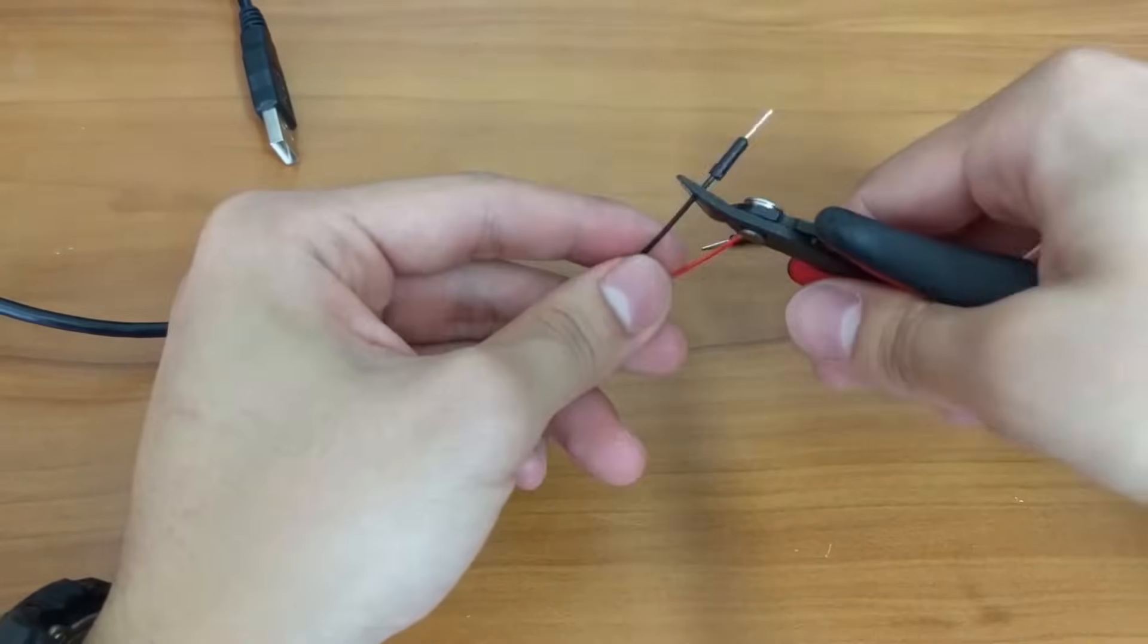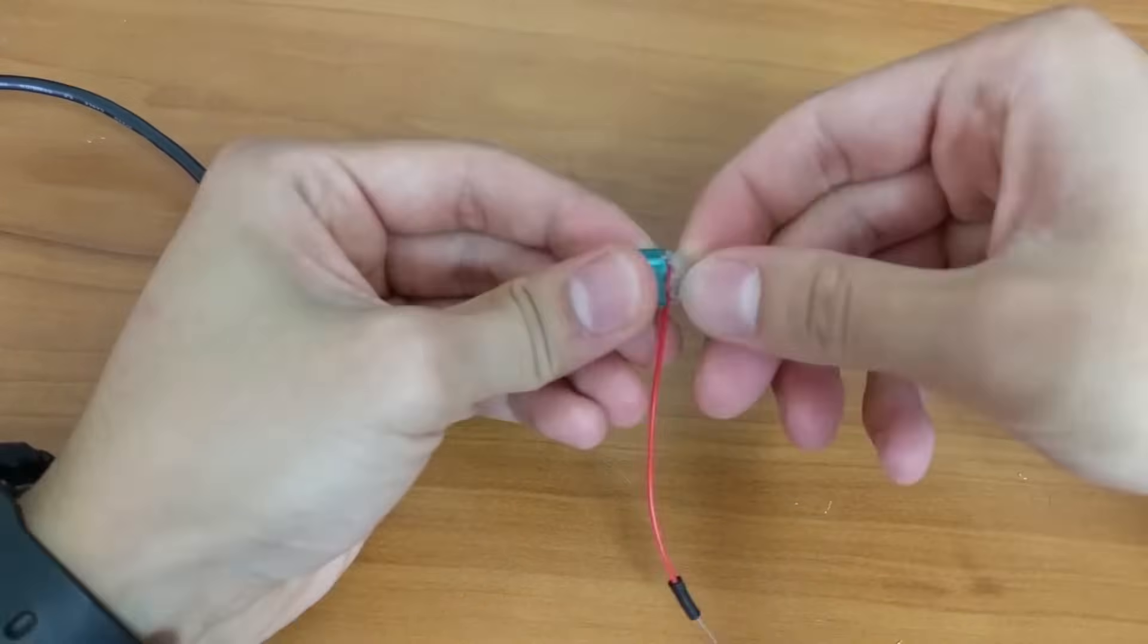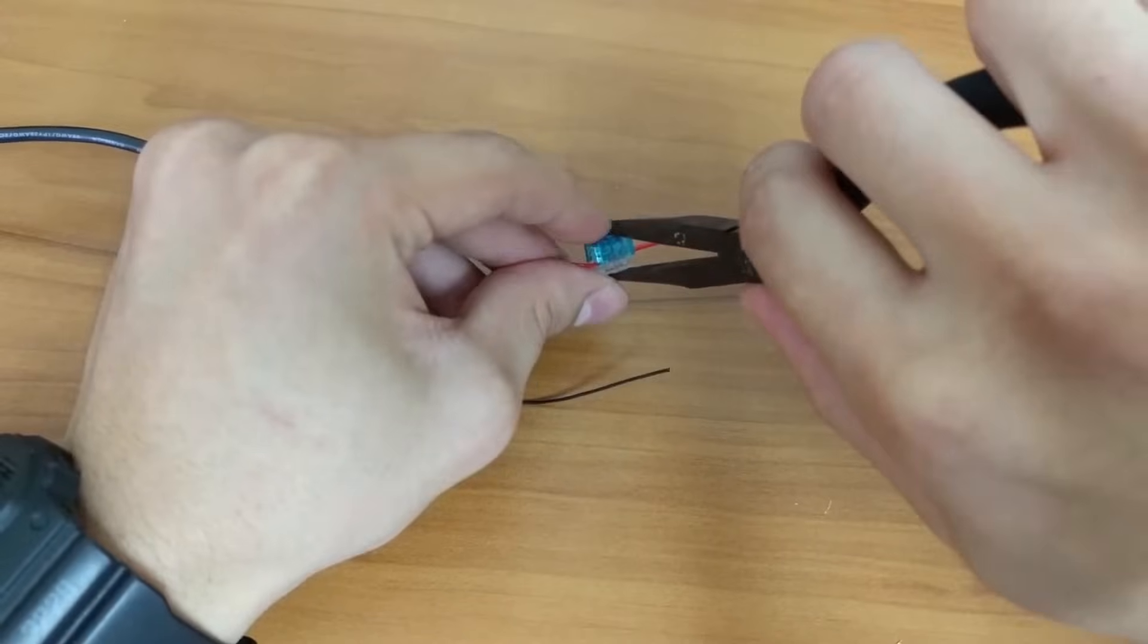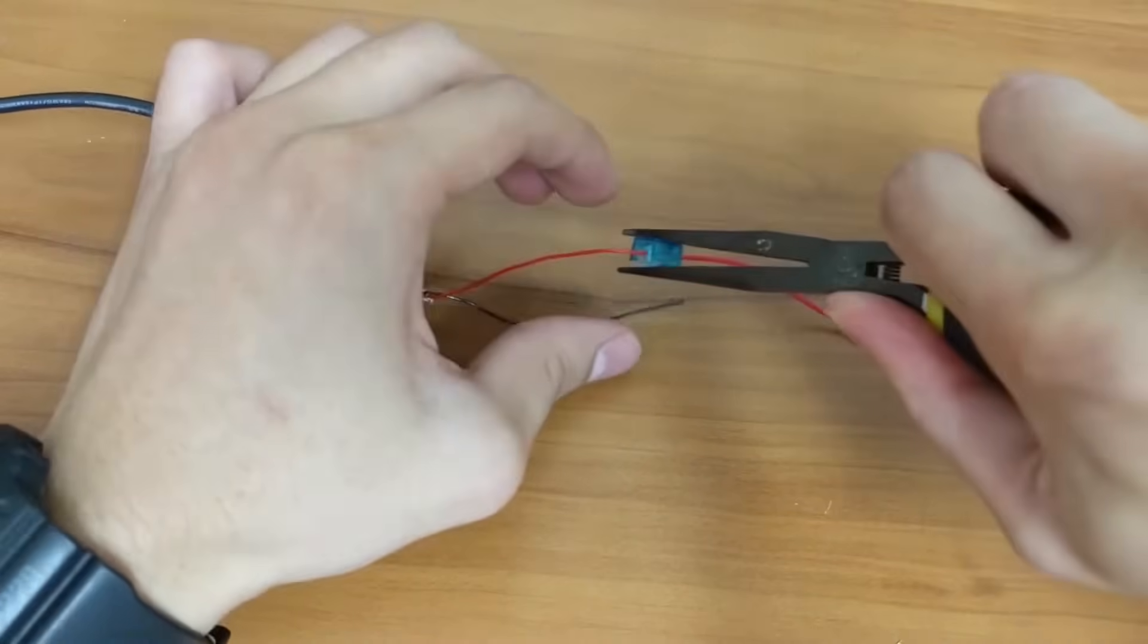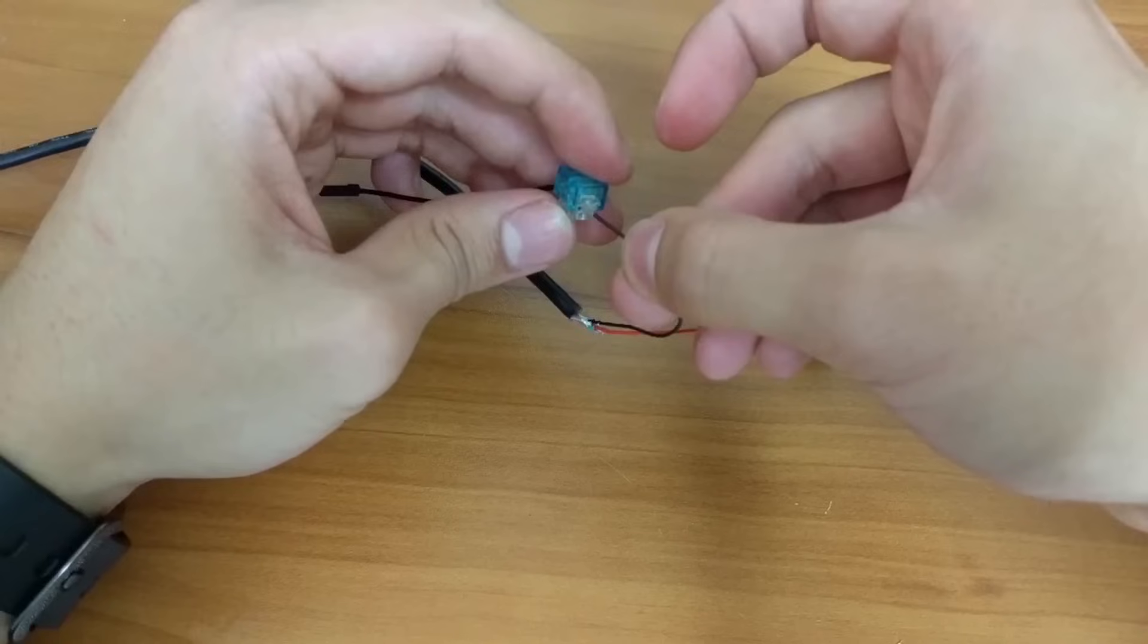Next, clip off both jumper wires. Then insert both wires into the splice connector. You can then use the plier to splice the wires together. Do the same thing for the other wire.